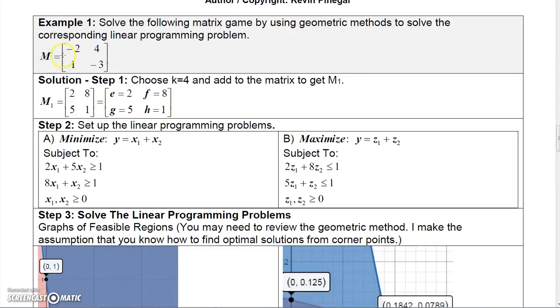Here's our matrix. If we add 4 to each of these, so just add 4, I'm just going to put a big old 4 here to let you know I'm adding 4 to everyone. Negative 2 plus 4 is 2, 4 plus 4 is 8, 1 plus 4 is 5, and negative 3 plus 4 is 1. So E is 2, F is 8, G is 5, H is 1.